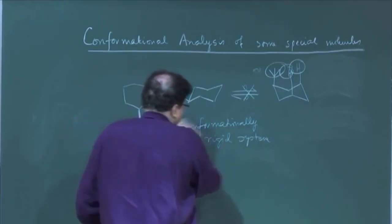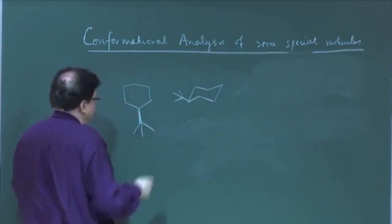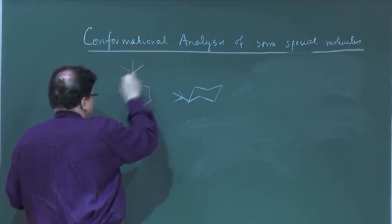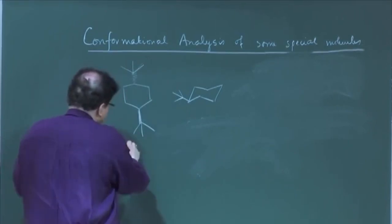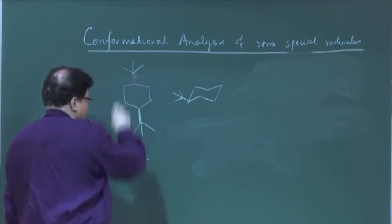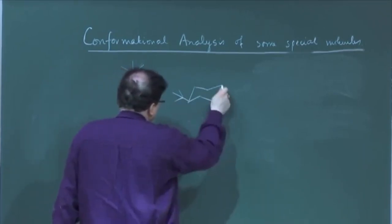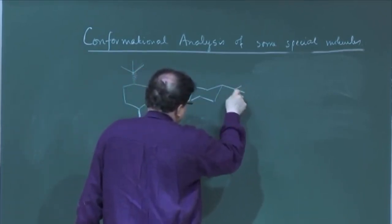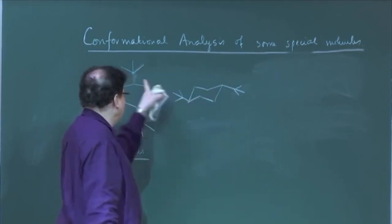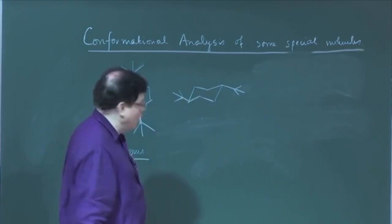Now suppose instead of one tert-butyl I have a 1,4-di-tert-butyl system. Consider the trans form — trans-1,4-di-tert-butylcyclohexane, where one is beta and the other is alpha. There is no problem here, because both tert-butyl groups can occupy the equatorial positions. So that is the most stable conformation, and this is also a conformationally locked system.